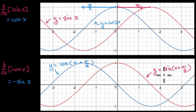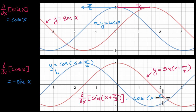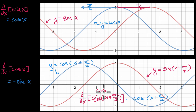It should still be the case that the derivative of the red graph is the blue graph. So we should still be able to say that the derivative with respect to x of the red graph — sine of x plus pi over two — is equal to the blue graph, cosine of x plus pi over two. Now, sine of x plus pi over two is the same thing as cosine of x.